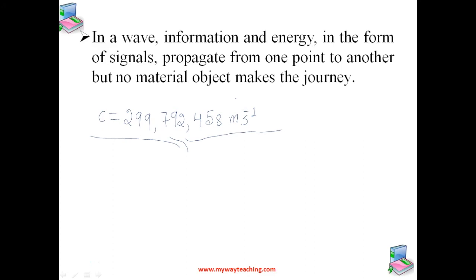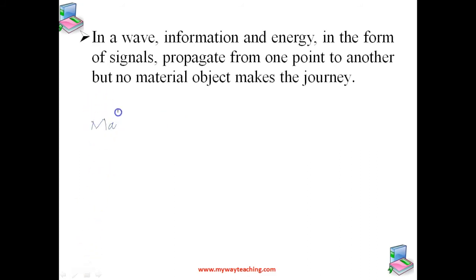The third kind of wave is the matter wave, which is associated with matter — usually neutrons, electrons, protons, atoms, and molecules. Matter waves arise in a quantum mechanical description of nature. Though conceptually more abstract than mechanical or electromagnetic waves, they have found applications in modern technology; for example, matter waves associated with electrons are employed in electron microscopes.